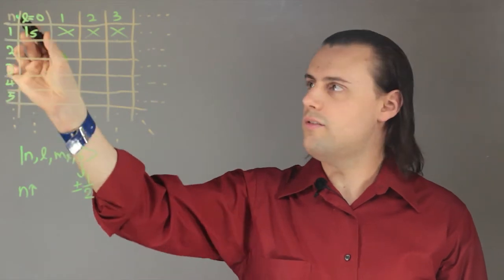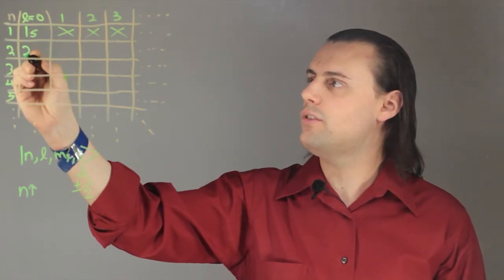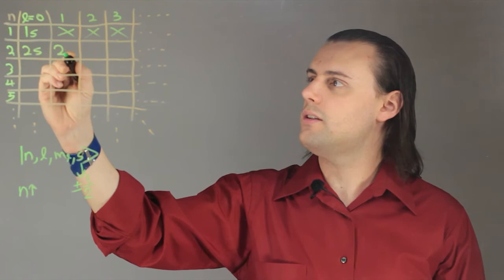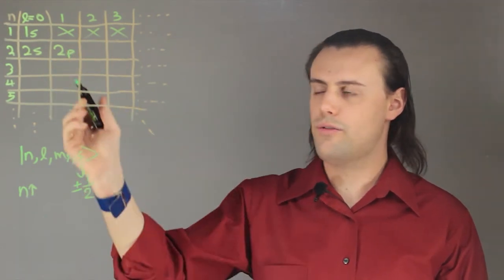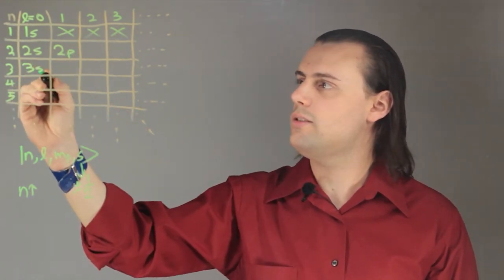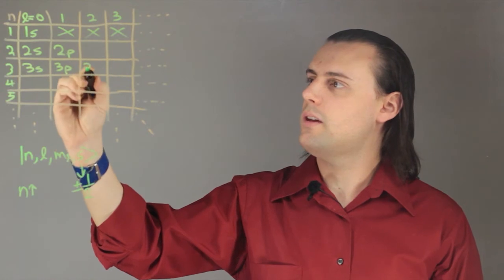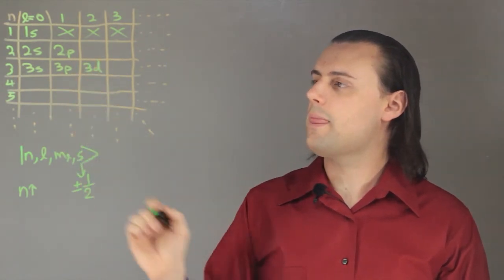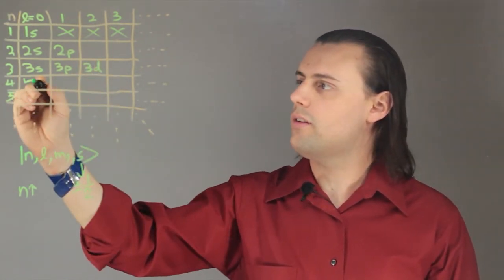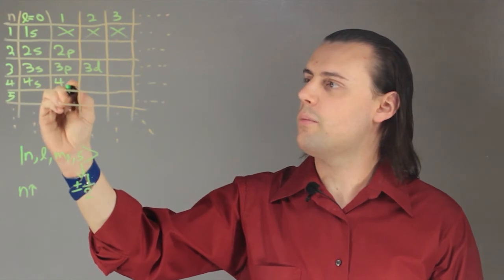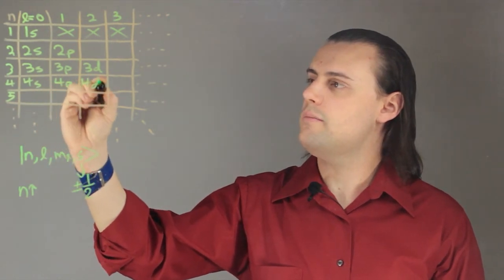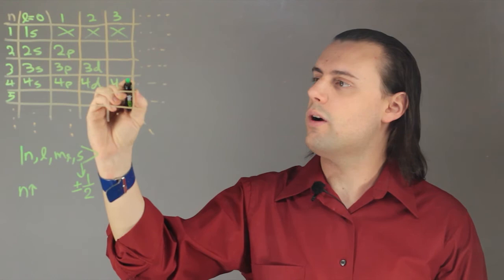So in the case of n equals 2, we can have 2s and 2p. For 3, we have 3s, 3p, and 3d. For 4, we have 4s, 4p, 4d, and 4f.